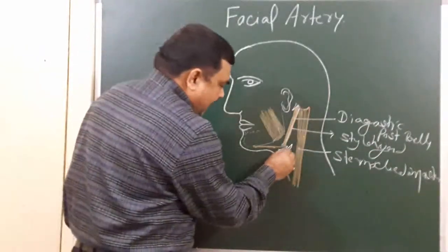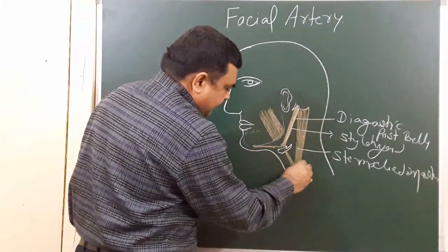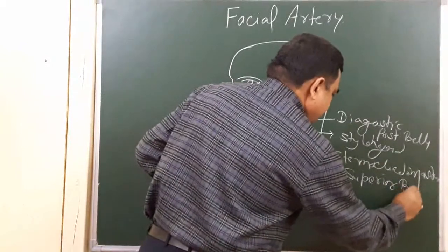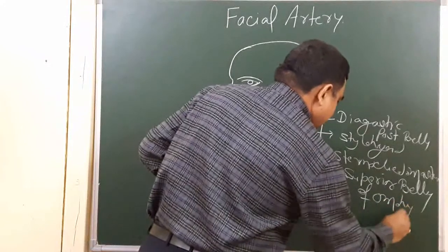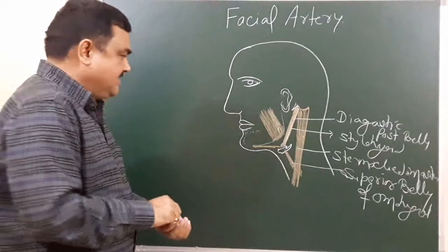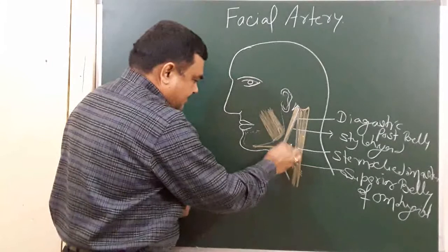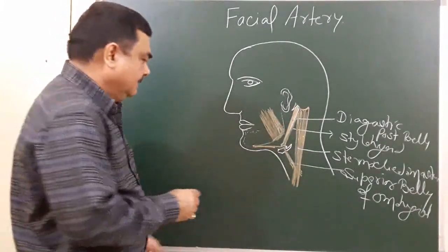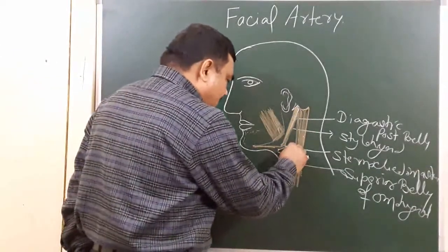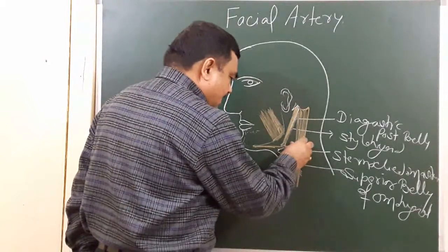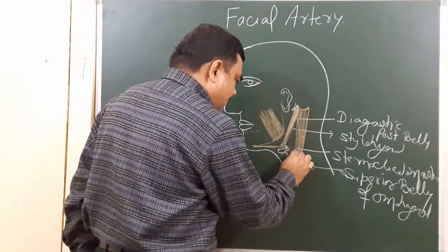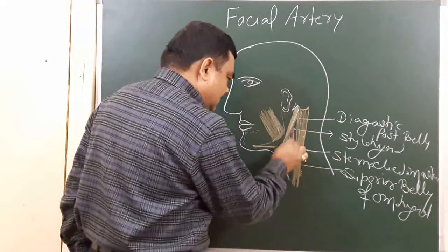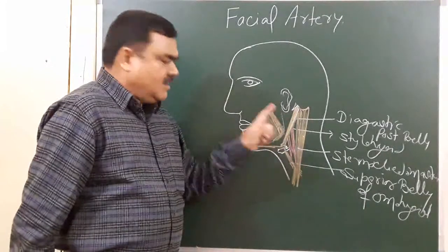Here is the superior belly of the omohyoid. You can see this triangular structure — this is the carotid triangle. In this carotid triangle, one important structure is the common carotid artery, which divides into the external carotid and internal carotid arteries. The common carotid divides into external and internal carotid arteries in the carotid triangle.